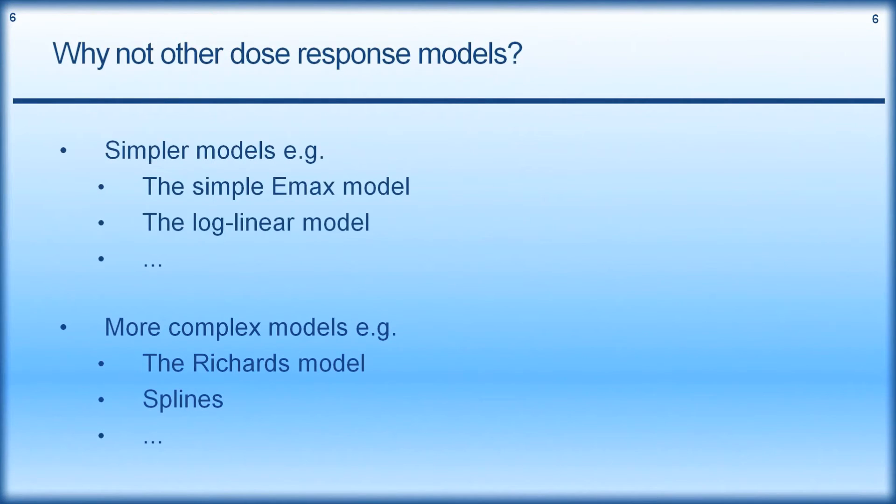So why not use other dose response models? Perhaps we can think about simpler models. So a very commonly used model is the simple Emax model. So not the sigmoidal Emax model, so therefore when the Hill coefficient is fixed to 1. Another simpler model that I won't go into detail today, but I'll just mention now is the log-linear model. So back in the 70s and 80s, we often worked with linear type models because it was difficult to work with non-linear models. Now it is not difficult to work with non-linear models. So really log-linear type models should be put in the past.